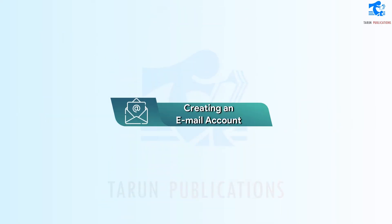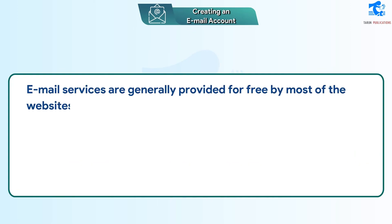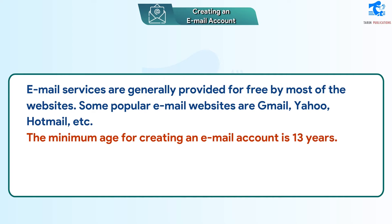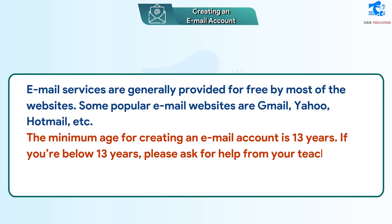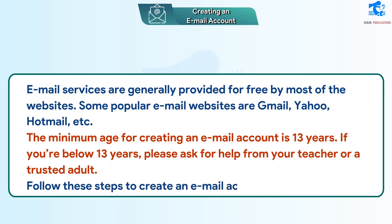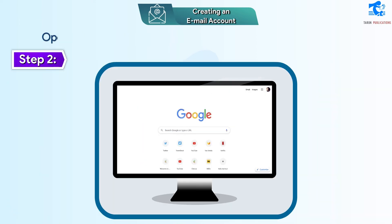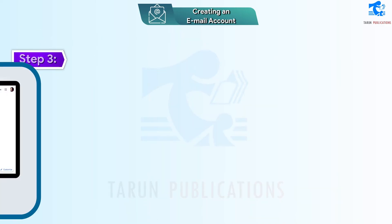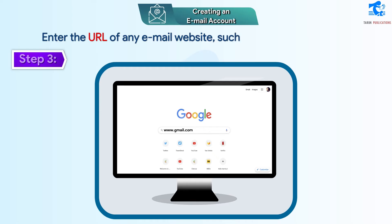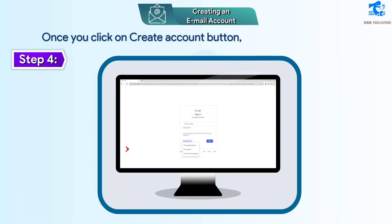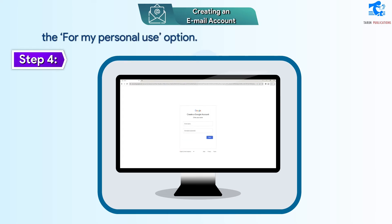Creating an email account. Email services are generally provided for free by most websites. Some popular email websites are Gmail, Yahoo, Hotmail, etc. The minimum age for creating an email account is 13 years. If you are below 13 years, please ask for help from your teacher or a trusted adult. Follow these steps to create an email account: Step 1 – Connect your device to the internet. Step 2 – Open any web browser. Step 3 – Enter the URL of any email website, such as www.gmail.com for Gmail. Step 4 – Click on the Create Account button on the web page. Once you click on Create Account, you will have to choose the 'For My Personal Use' option and a new window will open.